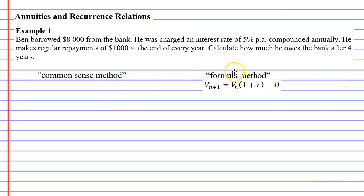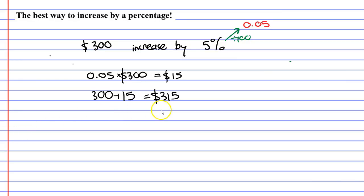When we look at example one, we've got to increase by a percentage four times. This can take us quite a while to do, so we want to cut back our calculations as much as we possibly can.